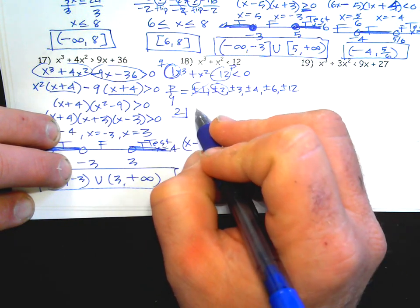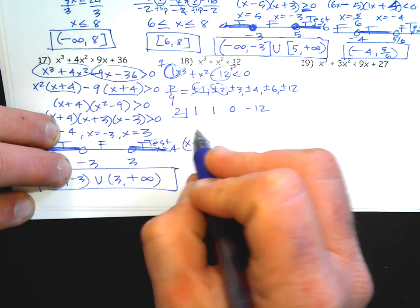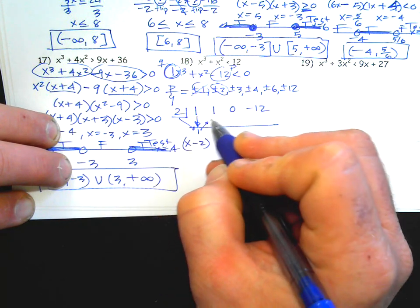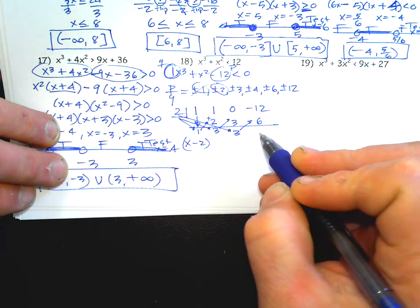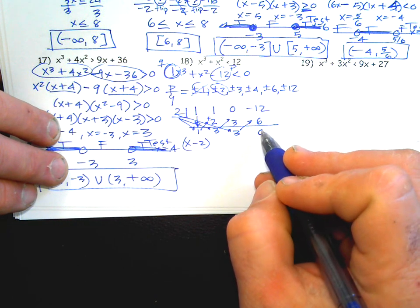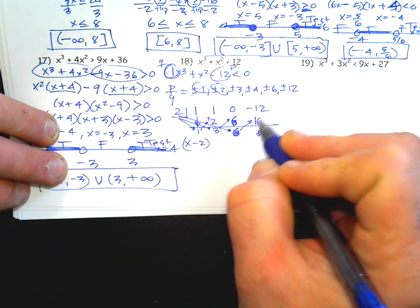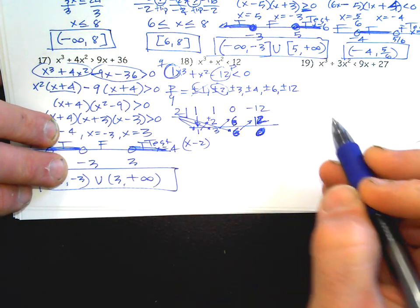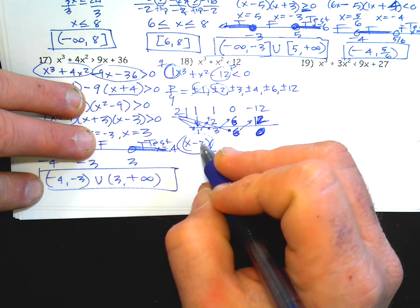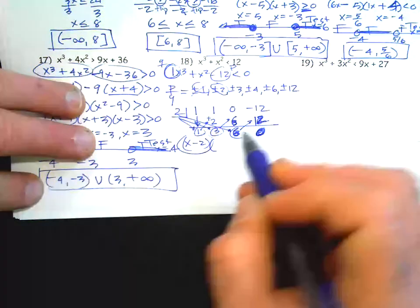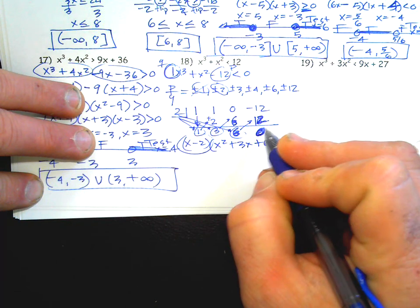Since x equals two is a root, x minus two is a factor. Use synthetic division: write the coefficients one, one, zero, negative twelve — include a zero placeholder for the missing term. Drop the first one down, multiply by two, add, continue across. I made a mistake — two times three is six, and two times six is twelve. If you don't get zero at the end, you either picked the wrong number or made an arithmetic error. Factor out x minus two, and the remaining coefficients give you a new polynomial one degree less: x squared plus 3x plus six.